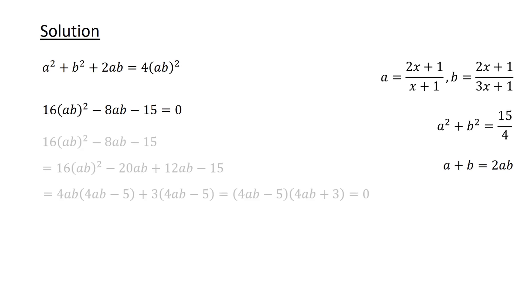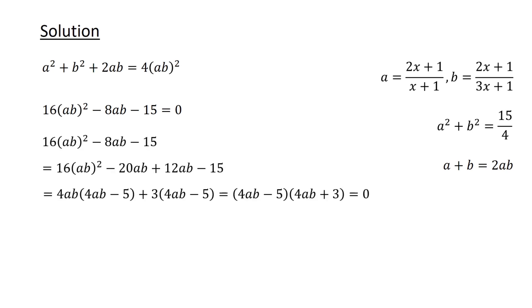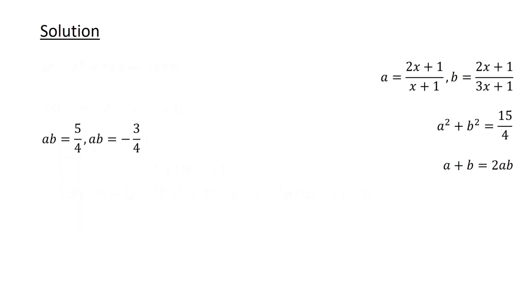We solve this quadratic equation by factorization, giving us ab equals 5 over 4 or ab equals minus 3 over 4.